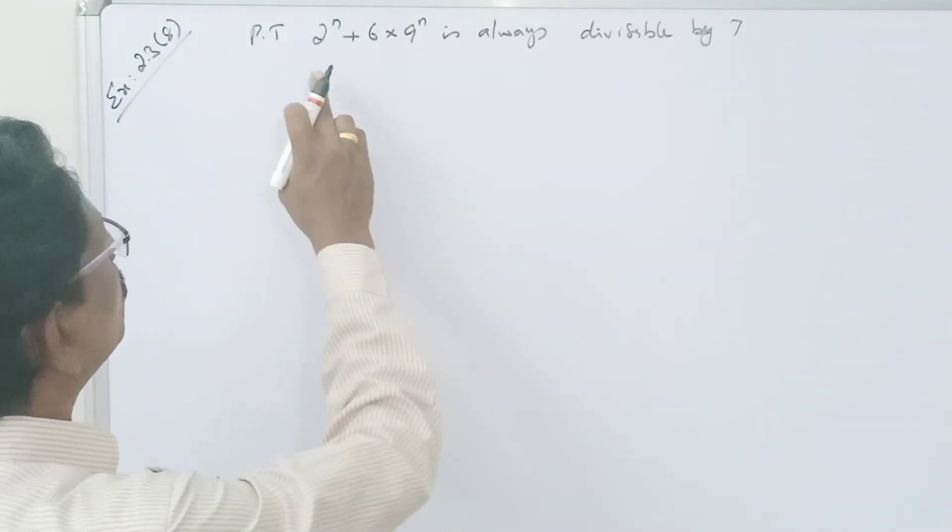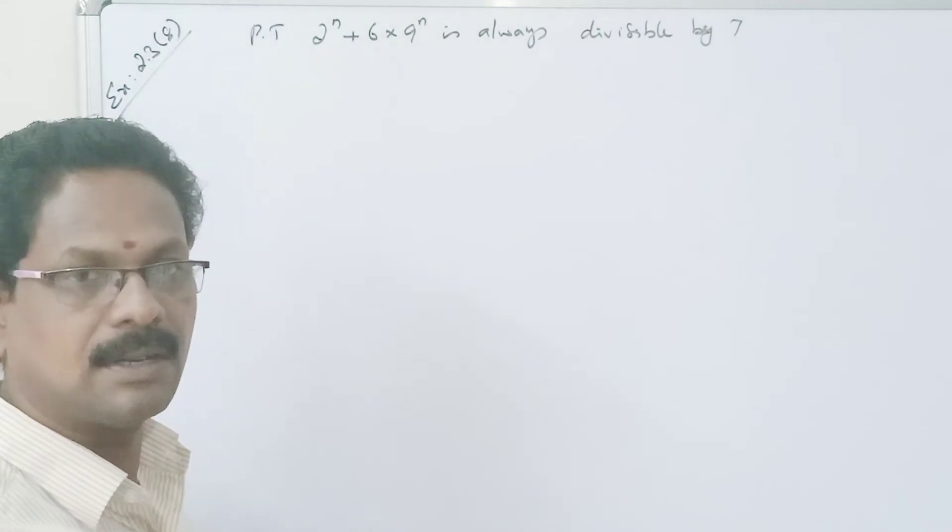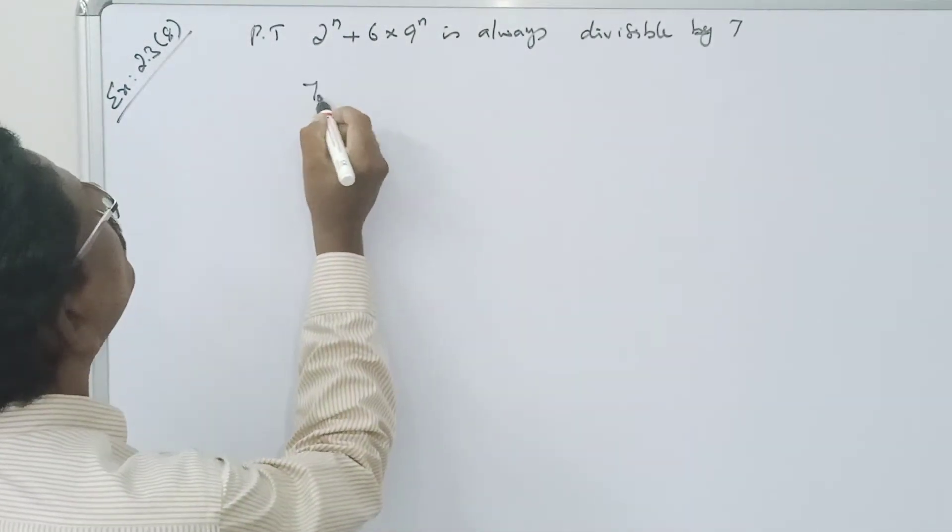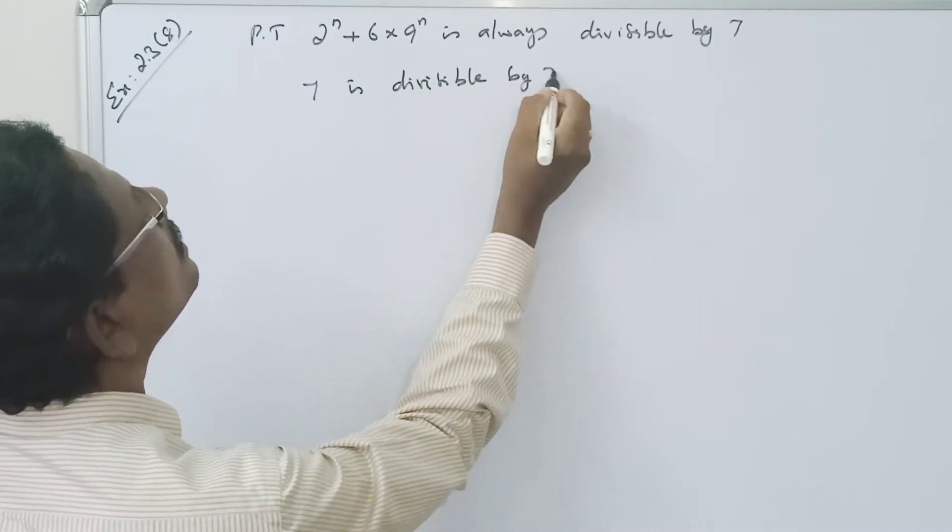Welcome to Marithra Maths. 2 power n plus 6 into 9 power n is always divisible by 7. We know that 7 is divisible by 7.